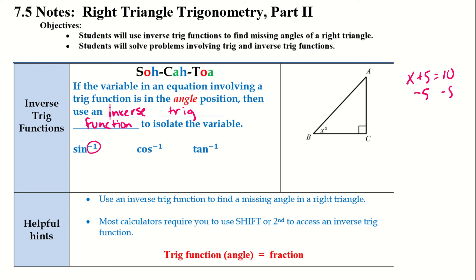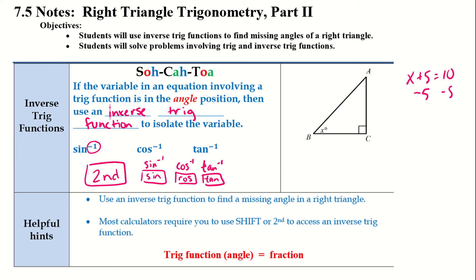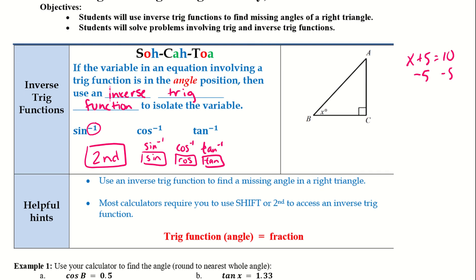To access these on your calculator, press the second button, and then you have your three buttons that say sine, cosine, and tangent. Right above those will be the inverse functions labeled there. So once you press second, you click the one that you want and you'll have your inverse trig functions. Helpful hint: use an inverse trig function to find a missing angle in a right triangle. Most calculators require you to use the shift or second button to access an inverse trig function.